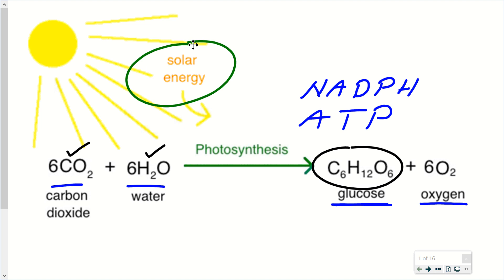We'll see that it's a multi-step process involving many, many energy transformations, beginning with light energy and ultimately producing ATP, the usable energy source for the plant. Also making carbohydrates, and from this glucose, the plant will even convert it into storage forms — things like starch and also cellulose.